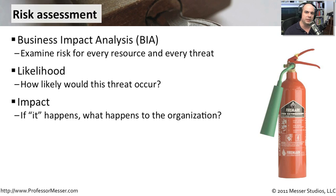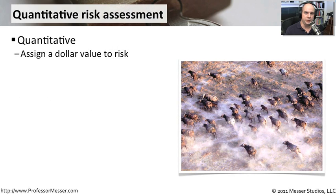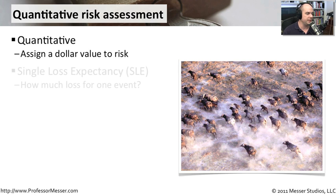Maybe if we lose a particular resource — maybe a mail server — in your environment, losing a mail server for a day isn't an enormous problem. Or maybe in your environment, losing a mail server is a big deal. So you need to think about what the impact will be should that particular resource no longer be available. It's sometimes very useful when calculating risk to put it in dollar signs, to get an absolute number. We want to quantify what type of risk we may be taking, and that way we're able to make business decisions based on those risks.